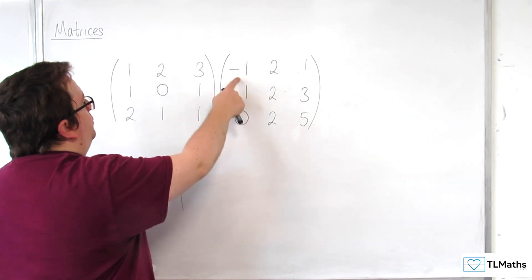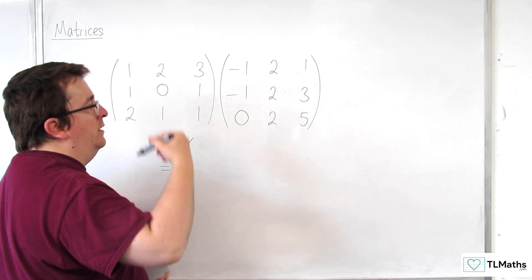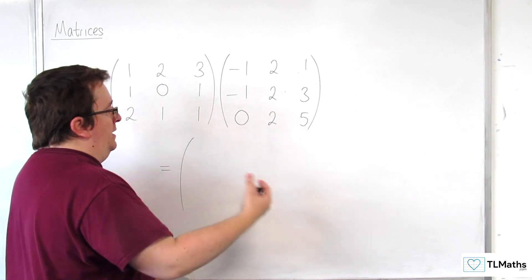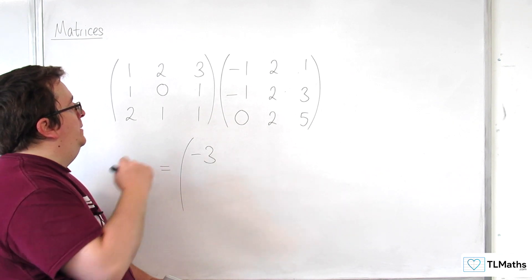So, we're going to get -1, -2, and 0. And so, -1, plus -2, plus 0 is -3. So, that's our first element.